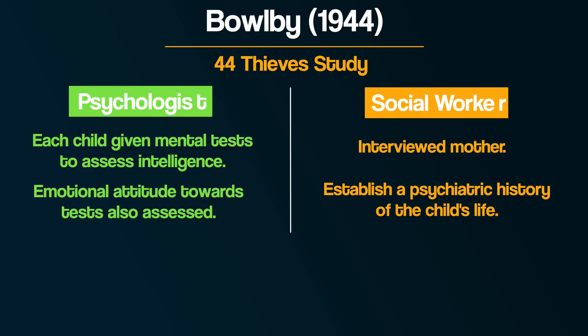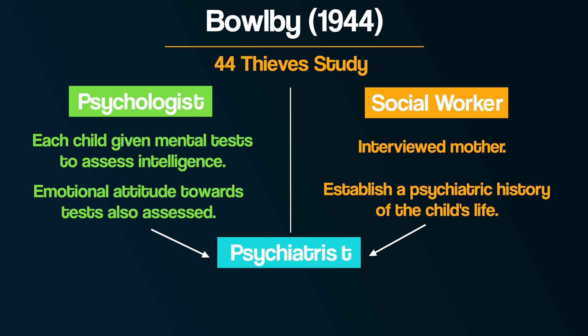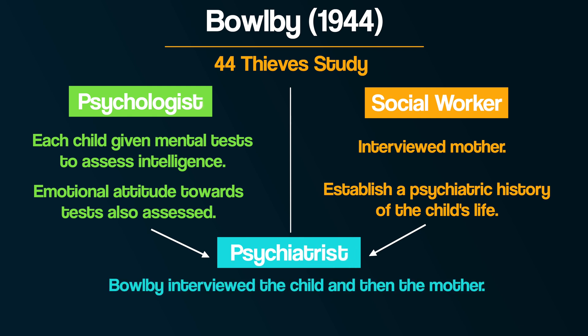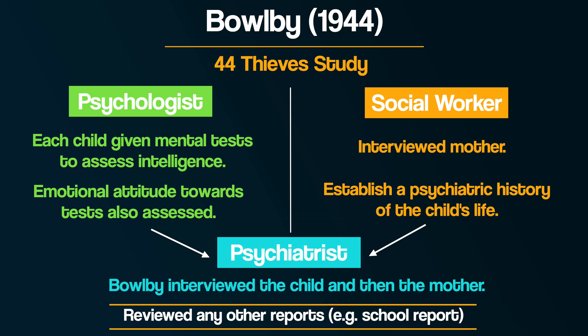The psychologist and the social worker then gave their reports to the psychiatrist, who was John Bowlby, who then interviewed first the child and then the mother. Having gathered all the information from the assessments and interviews, they reviewed any of the reports they had — for example, from schools — before drawing a conclusion.